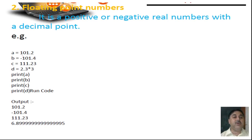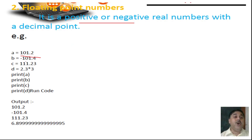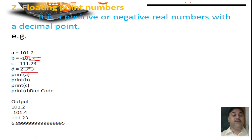Floating point data type means it will consist of a decimal point number, positive or negative — a real number with a decimal point. Examples: 101.2, minus 101.4, 10111.23, 2.3 into 3. These are the different types of floating point data types and you are working with all these different floating points.